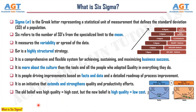To begin with, what is Six Sigma? Sigma is the Greek letter representing a statistical unit of measurement that defines the standard deviation of a population. Six refers to the number of standard deviations from the specification limit to the mean. It measures the variability or spread of the data. Six Sigma is a highly structured strategy — a comprehensive and flexible system for achieving, sustaining, and maximizing business success. It is more about the culture than the tools, and all the people who adopted quality in everything they do. It is people driving improvements based on facts and data and a detailed roadmap of process improvement.